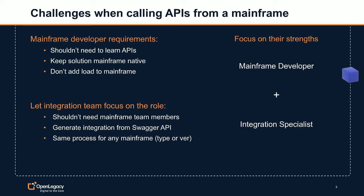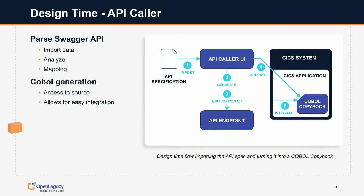To talk about how specifically we can do that, I'll move it over to Marty. We're going to use API Caller, which is an OpenLegacy product, to show how this actually works. The basic idea is that, like most development teams, you have a design time and a run time. I'm going to start by describing the design time — how you design it, how you develop the code — and then afterwards talk about the runtime and how it all works together.